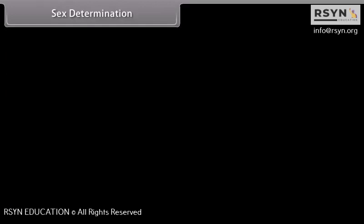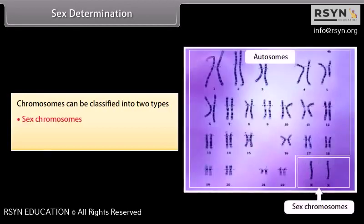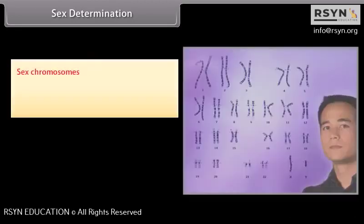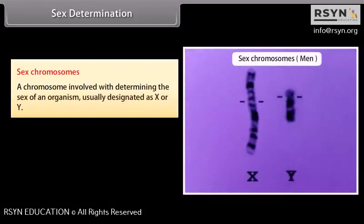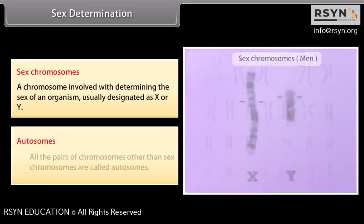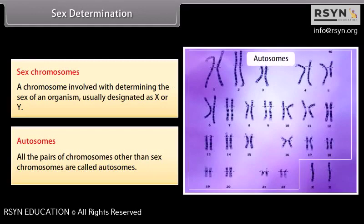Sex Determination. Chromosomes can be classified into two types: sex chromosomes and autosomes. Sex chromosomes are chromosomes involved in determining the sex of an organism, usually designated as X or Y. Autosomes are all the pairs of chromosomes other than the sex chromosomes.